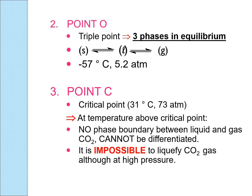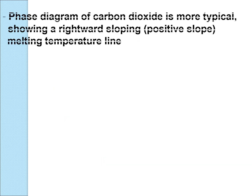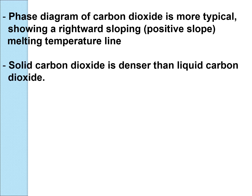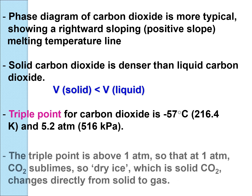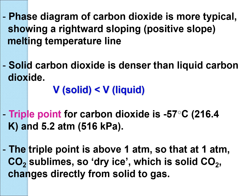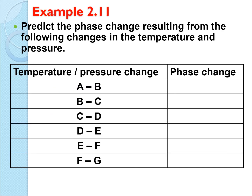In conclusion, the phase diagram of carbon dioxide is typical, showing a right-sloping positive slope of the melting line. Solid carbon dioxide is denser than liquid carbon dioxide. However, the triple point is at a very high pressure of 5.2 atm. So at 1 atm, carbon dioxide sublimes and dry ice changes directly from solid to gas.